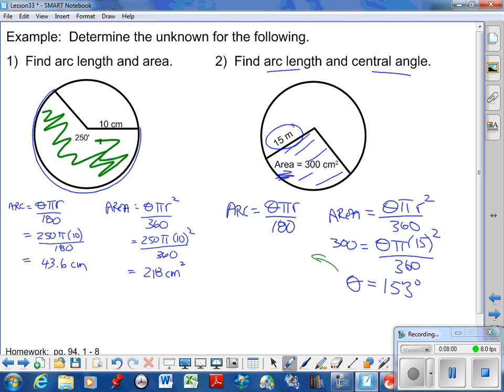Now I can use it to find arc length. 153 times π times 15 over 180. Multiply by 3.14, multiply by 15, and divide by 180. I get an arc length of 40 meters.